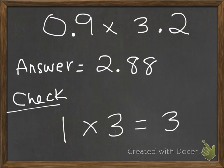If I take a look at my two answers, my original answer and my estimated answer, I can see that they're very close to each other, showing me that my answer of 2.88 is correct.